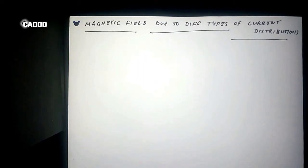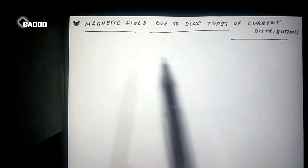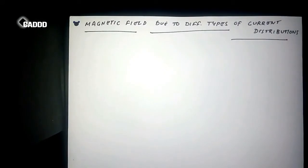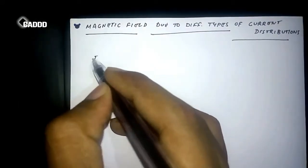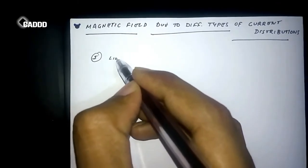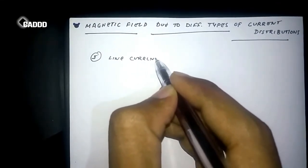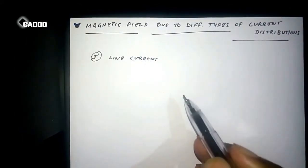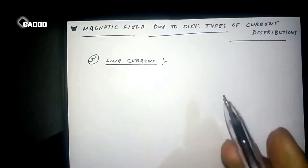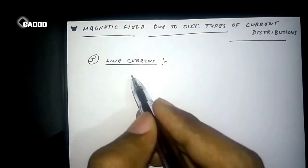Hello friends, my name is Akshans and welcome to CAD Academy. In this lecture I'll be teaching about magnetic field due to different types of current distributions. The first one is line current. For line current, it's simply about Biot-Savart law.